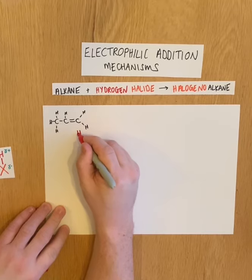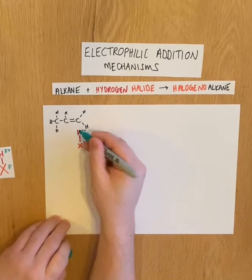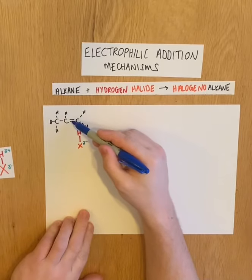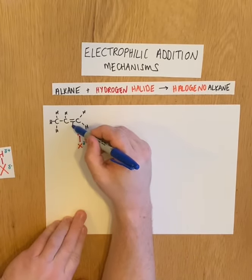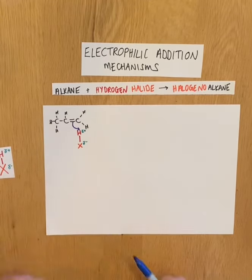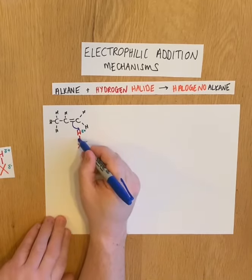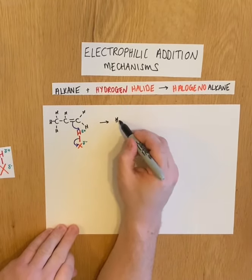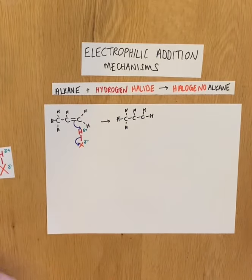I'll draw the hydrogen halide close to the carbon it's going to bond to first. The molecule is polar — delta-positive, delta-negative. In the mechanism, a pair of electrons comes from the pi bond of the double bond to form a bond between the carbon and the hydrogen. This then causes the hydrogen-halogen bond to break.